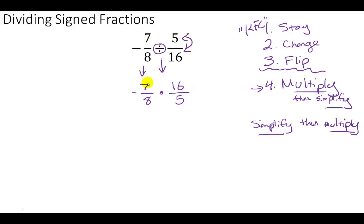I have a 7. There's no number that goes into both 7 and 8, and there's no number that goes into both 7 and 5. With 16, there's no number that goes into both 5 and 16. But when I look at 16 and 8, I know I can divide them both by 8. 8 divided by 8 gives me 1. 16 divided by 8 gives me 2. So I now have negative 7 over 1 times 2 over 5.